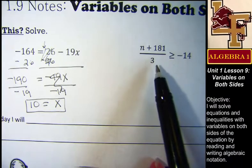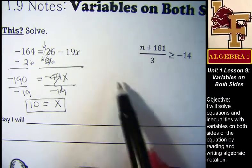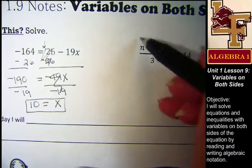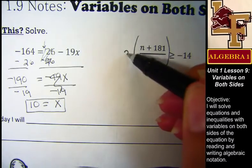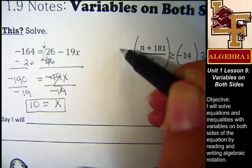I have a fraction. How do I get rid of fractions? Multiply by what? The three because it's the denominator. So to get rid of fractions, you multiply by the denominator.